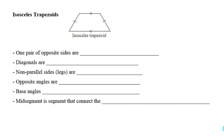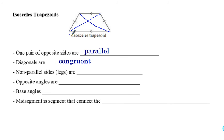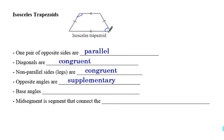An isosceles trapezoid has one pair of opposite sides that are parallel to each other, but also one pair of opposite sides that are congruent to each other. The diagonals are congruent to each other — if you drew in the diagonals, they would be the same length. The non-parallel sides, or the legs, are congruent. Opposite angles are supplementary, meaning this angle and this angle add up to 180.